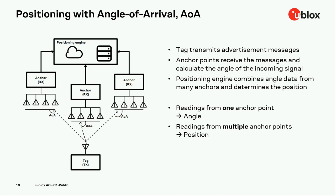Here is an example of how a positioning system with Bluetooth angle of arrival can look. You have the tag at the bottom that transmits the advertisement messages. You have anchor points which receive the messages with their antenna array and calculate the angle of the incoming signal. All three anchor points calculate the angle to the transmitter. The readings from one anchor point give you the angle, and you combine readings from multiple anchor points in a positioning engine to calculate the position.